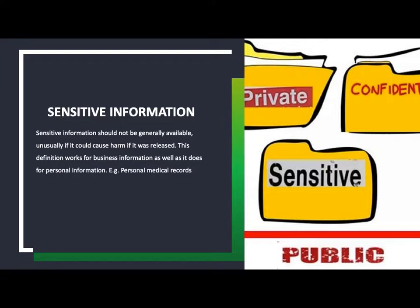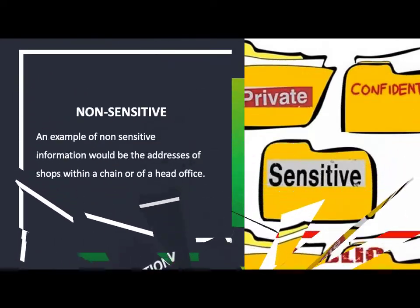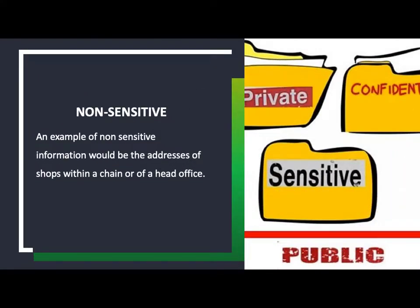So somebody who might be partially deaf, for instance — only certain people need to know about that, and not everybody needs to know that kind of information. Non-sensitive information is stuff like addresses for shops or for the head office — information that the public will actually need to see so they can attend that shop or head office.